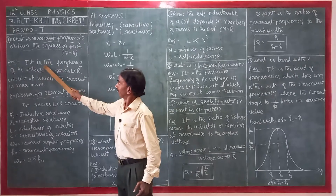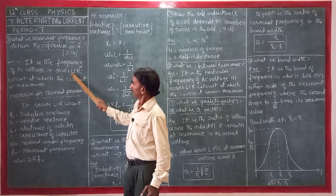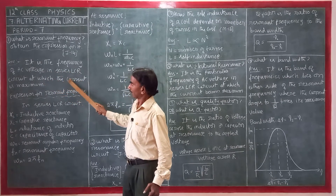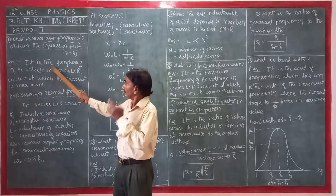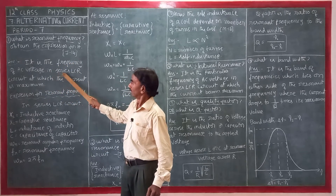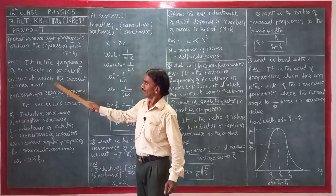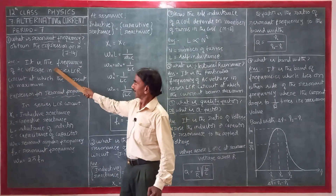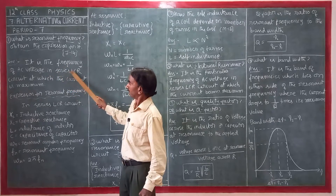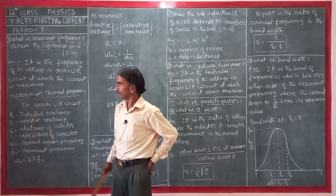So, resonant frequency is the frequency of AC voltage in a series LCR circuit at which the current is maximum.